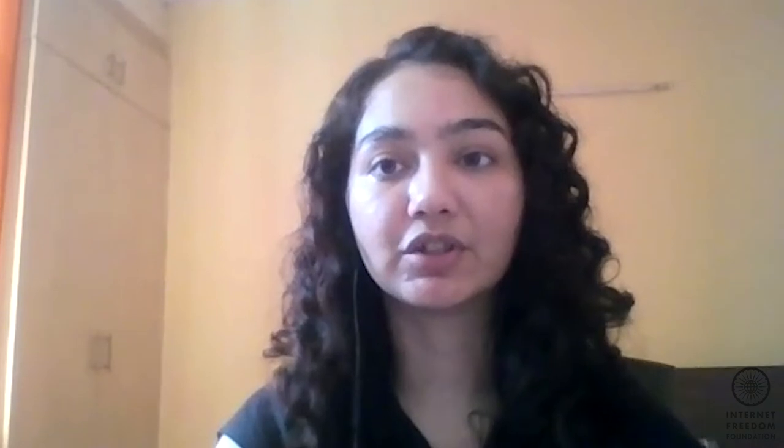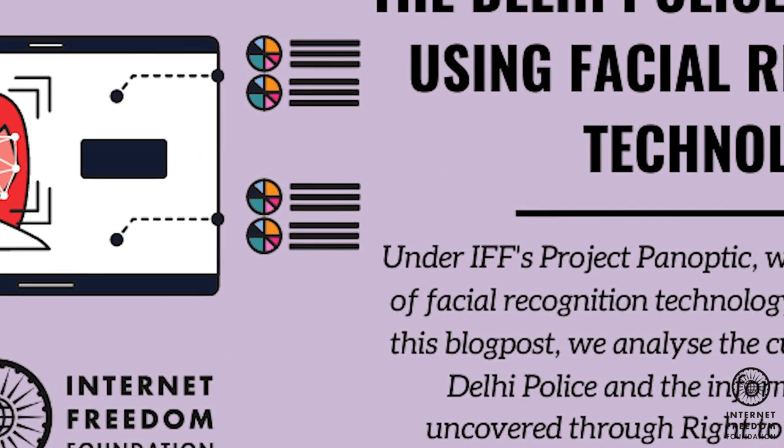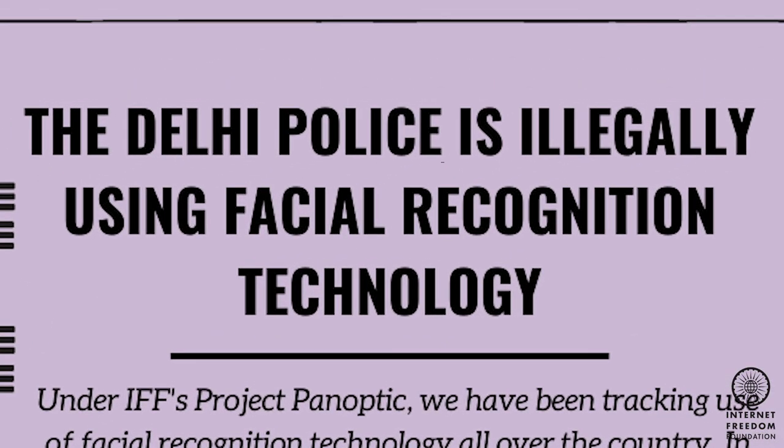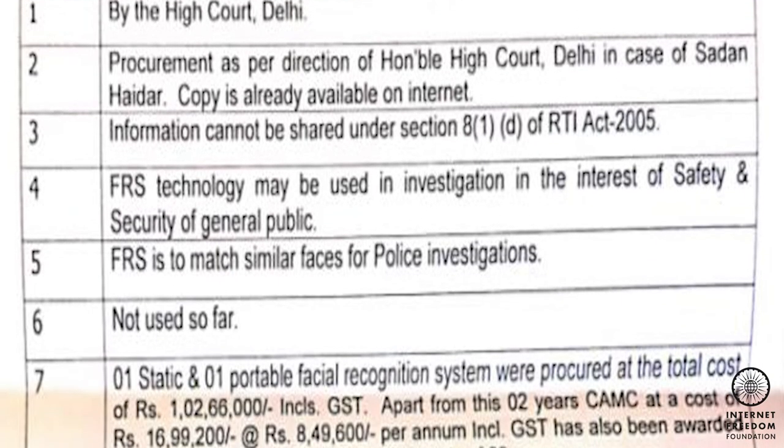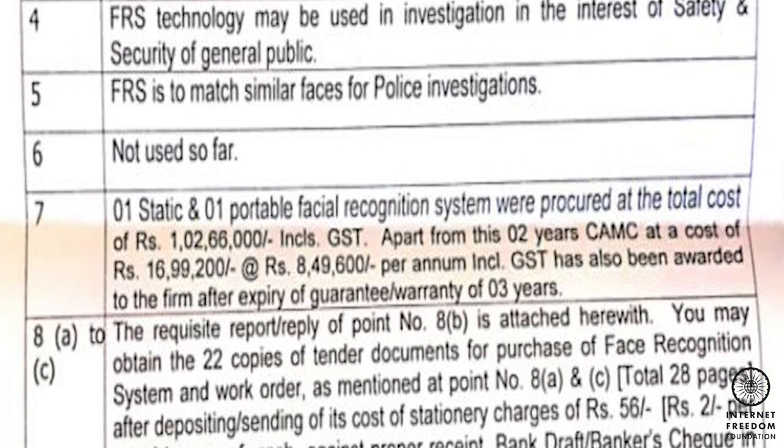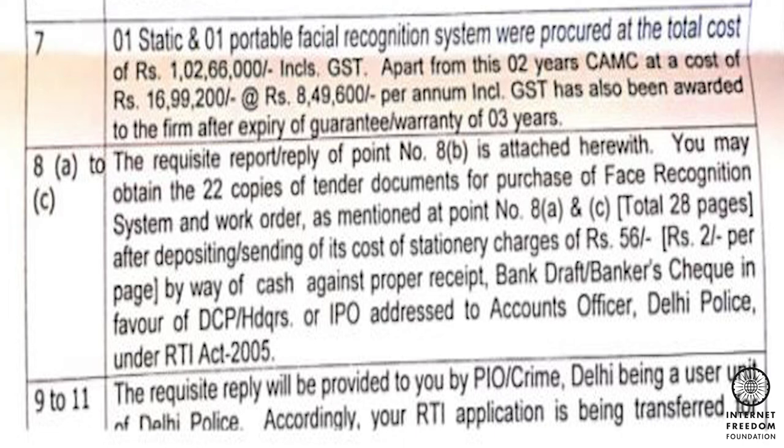Another facial recognition system that we have been following is the Delhi Police's facial recognition system. Since last year, reports have been emerging that the Delhi Police has been using facial recognition technology. As I mentioned earlier, the Delhi Police has been using facial recognition technology consistently since last year. During the protests which took place last year, multiple reports emerged of the Delhi Police using facial recognition technology. On December 20, 2019, we sent a legal notice to the Delhi Police asking them to halt such use since it is illegal. However, reports emerged that even in 2020, use of facial recognition technology by the Delhi Police is ongoing. Thus, we filed multiple Right to Information requests with the Delhi Police in order to obtain all relevant information from them. This information has been collated in a blog post, which can be accessed through the link below.